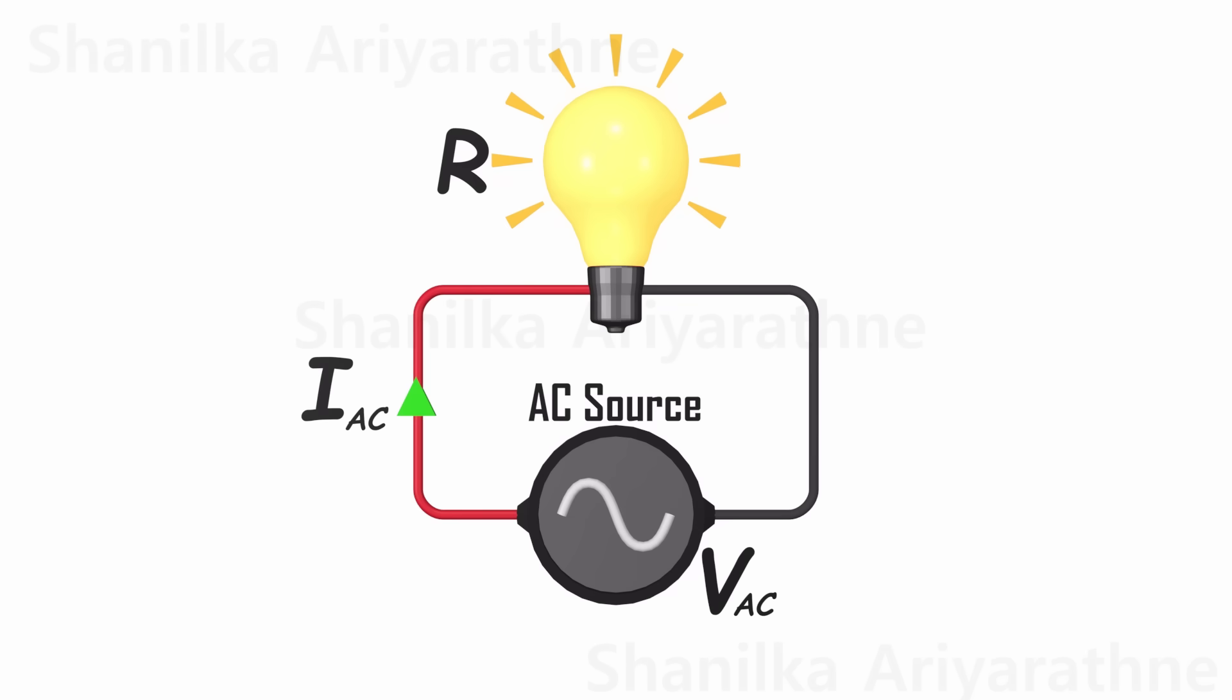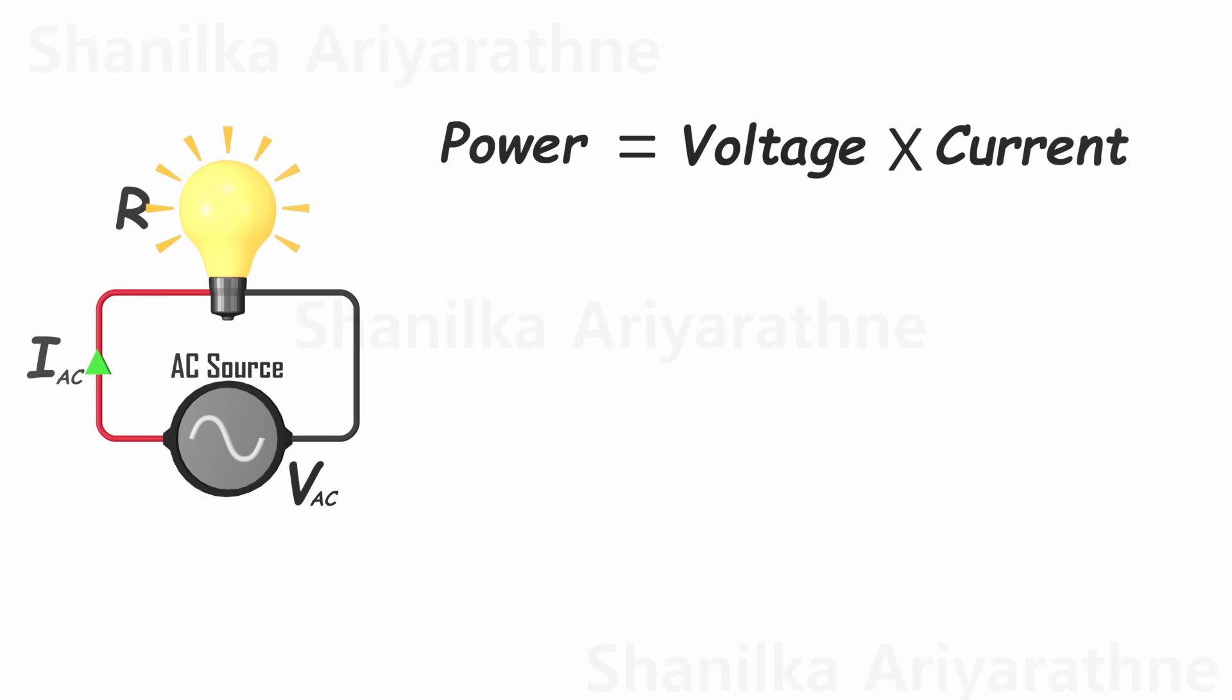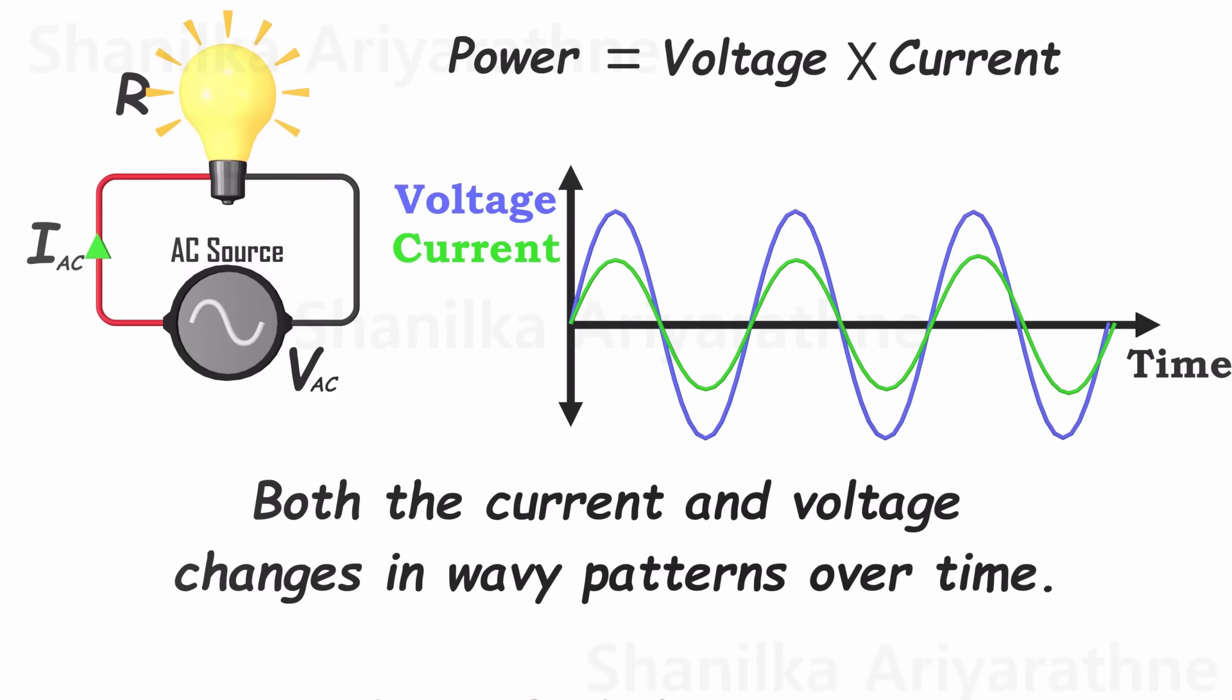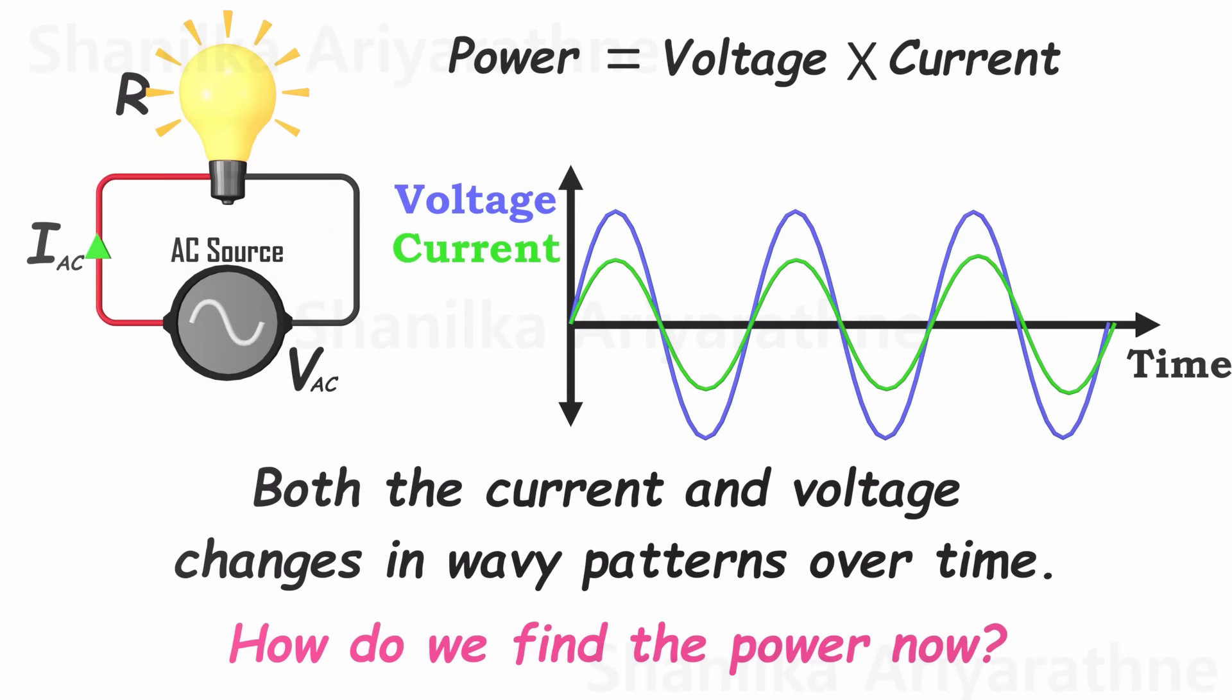Now, imagine a circuit using alternating current. Typically, we determine power by multiplying the voltage and current. But here's the twist. Both the current and voltage change in wavy patterns over time. So, how do we find the power now?